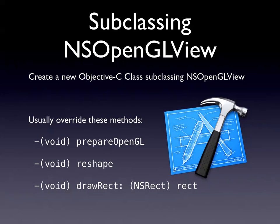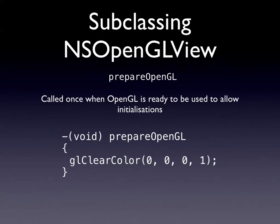To use NSOpenGLView, subclass it and override a few methods. PrepareOpenGL is the first: once OpenGL is ready it calls this method, like awakeFromNib in Interface Builder. Since NSOpenGLView manages the OpenGL context, make sure the context is set up before doing OpenGL stuff. Once prepareOpenGL is called, you can start OpenGL functions. GL_ClearColor sets the background - here (0,0,0,1) means black, fully opaque. Whenever you clear the screen, it will be black.